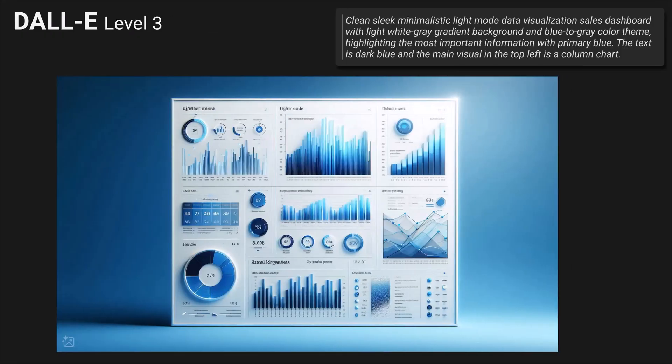Let's go to level 3. This prompt describes the attributes even more accurately. Additionally to the previous prompt it includes that it's a sales dashboard, that the text should be dark blue, the most important information should be primary blue, and the main visual on the top left should be a column chart. This is the result of DALL-E. There is no indication that it's a sales dashboard. The primary information is not really highlighted — everything is blue. The text looks more like black. There is a column chart on the top left but it wasn't consistent with other results. The visuals are not clear and the layout is very busy. We couldn't replicate it in Power BI but could maybe use the colors.